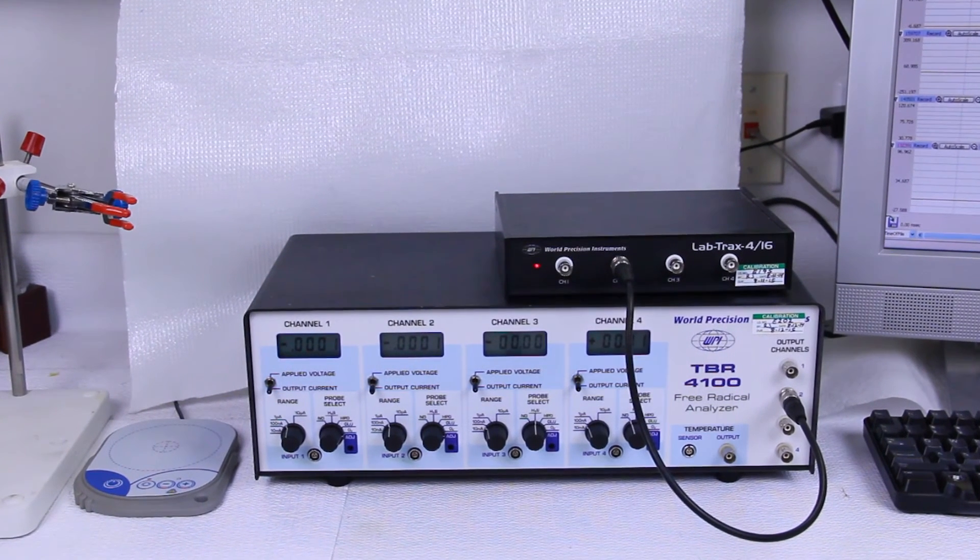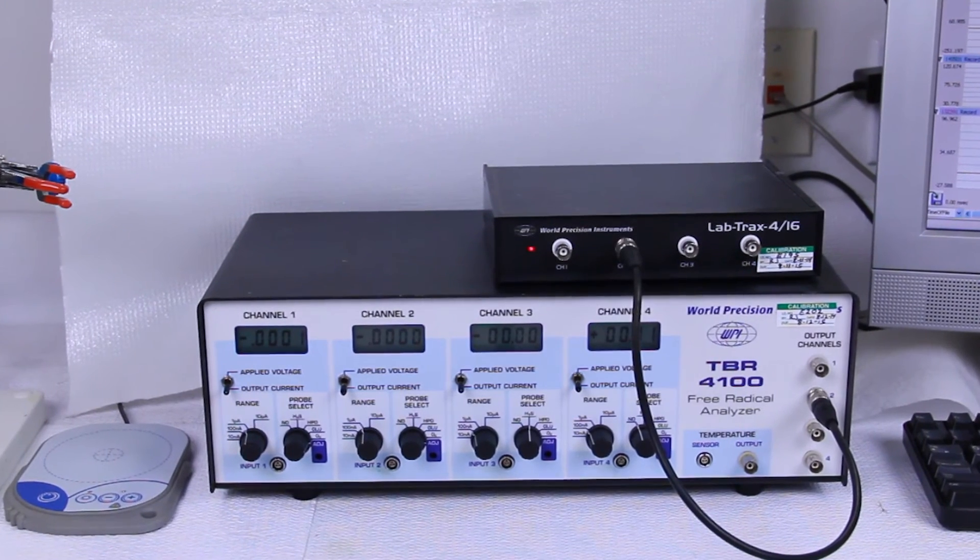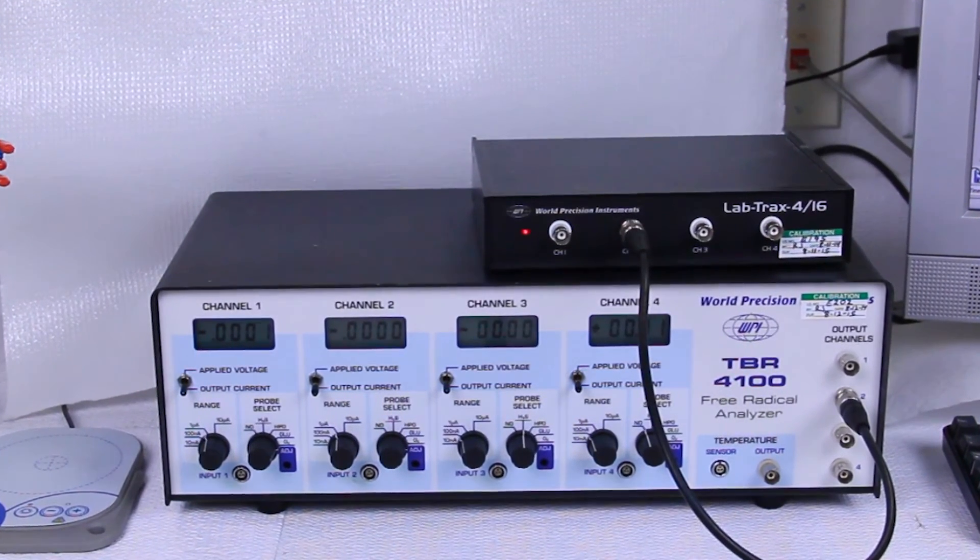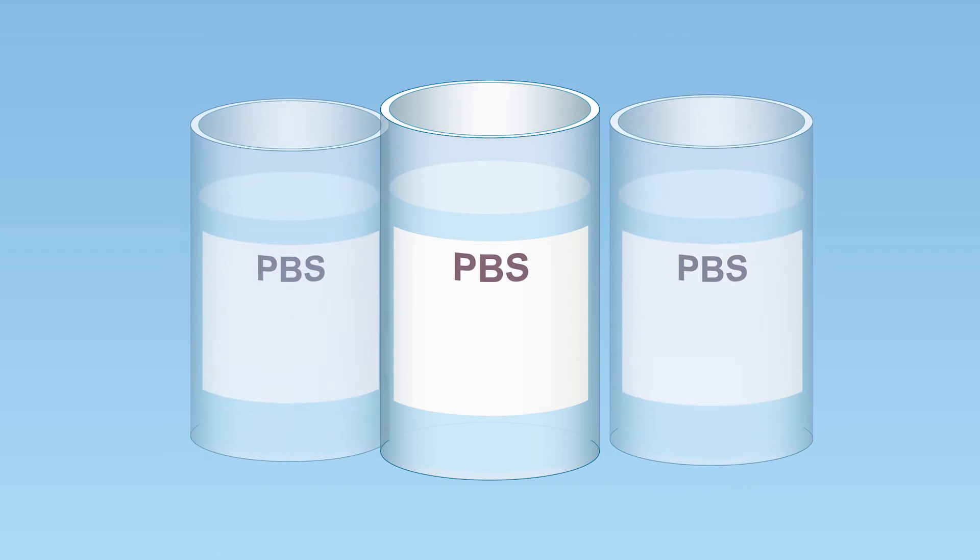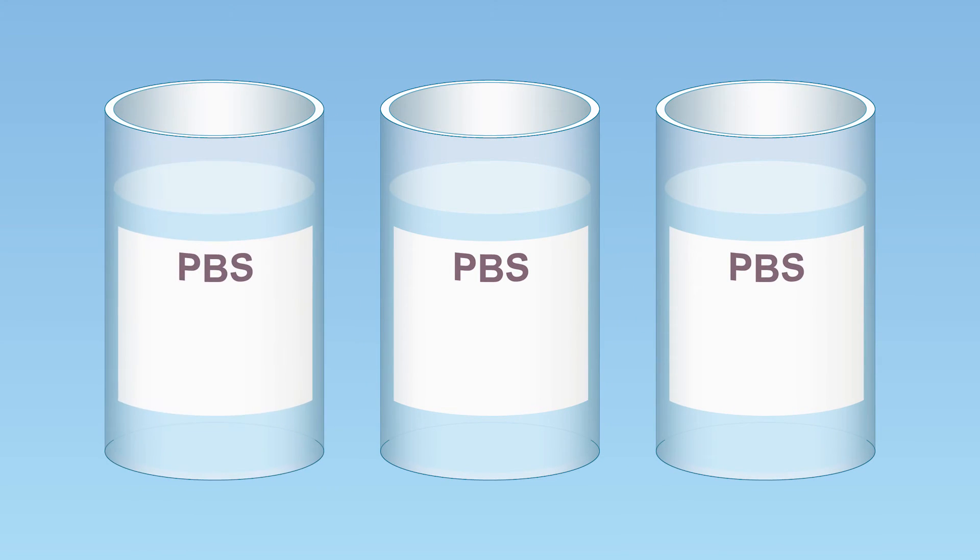Before it can be used in an experiment, it must be calibrated to determine its precise sensitivity and operating temperature. In the standard calibration protocol, the sensor will take measurements in three solutions with known concentrations of oxygen. A solution saturated with air has a 20.8% concentration of dissolved oxygen.